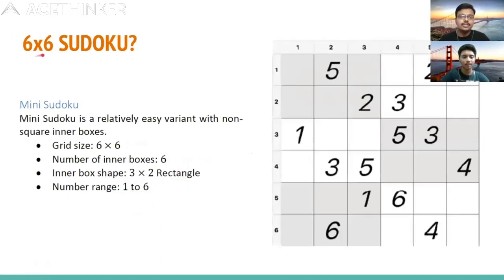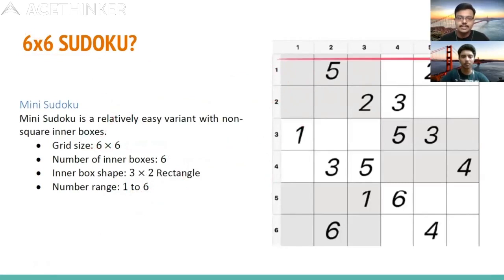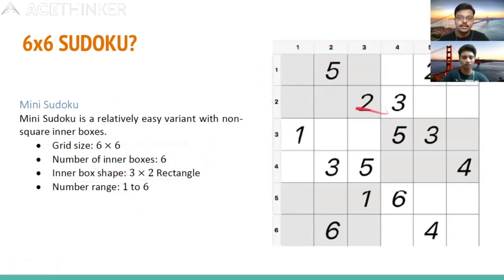This is an example of a 6×6 Sudoku. It has a grid of 6 rows and 6 columns, with 6 inner boxes each of size 3×2. The number range is from 1 to 6.